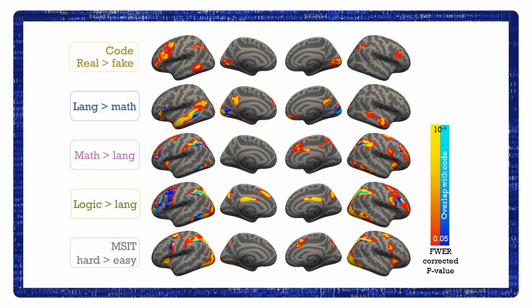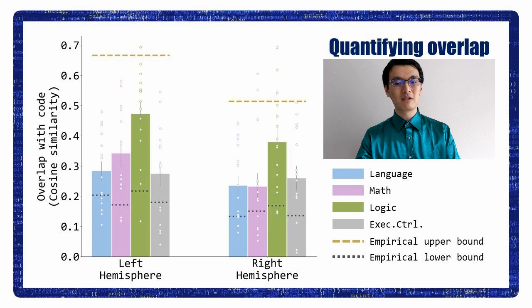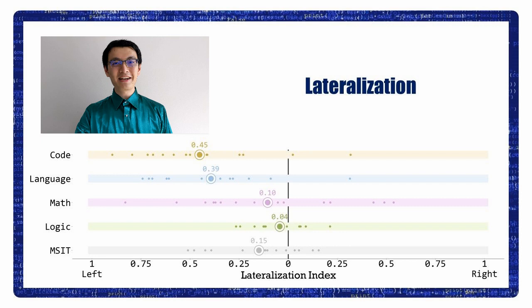Apparently, code comprehension overlapped the most with logic, and we can quantify this overlap using cosine similarity. Each dot in this graph stands for one participant. And the empirical upper bound is the overlap between half of the data for code comprehension and the other half. And the empirical lower bound is the overlap between each task with the scrambled activation map for code comprehension. So, each overlap was well above chance, but the overlap between code and logic was significantly higher than others. Math comes in a second place, but it's still far lower than logic.